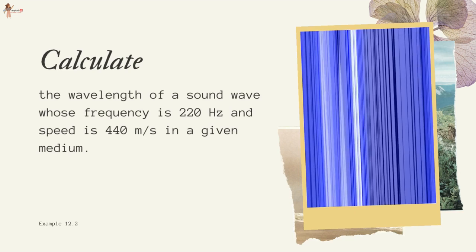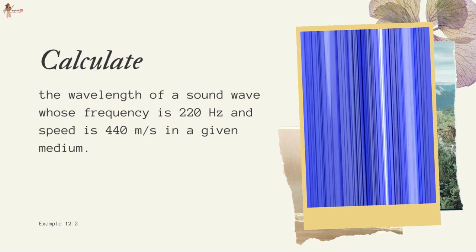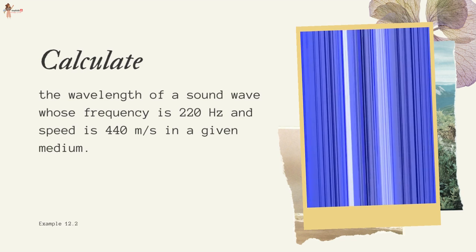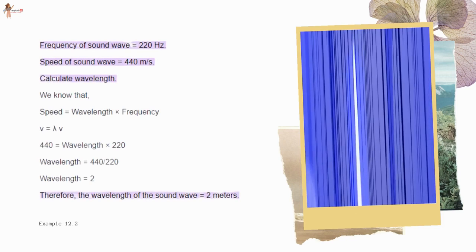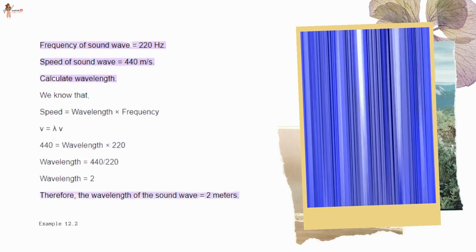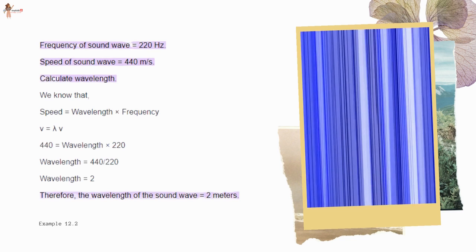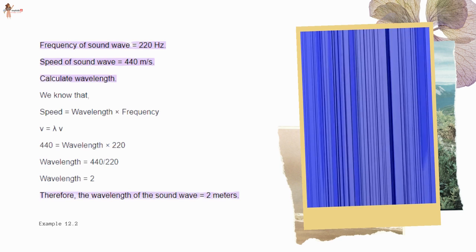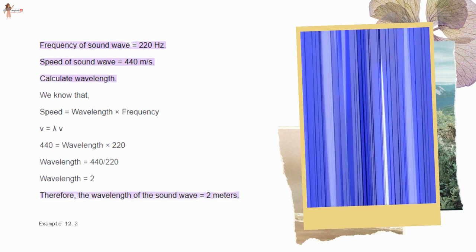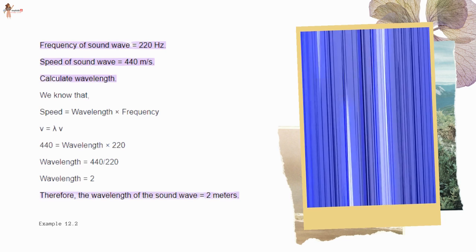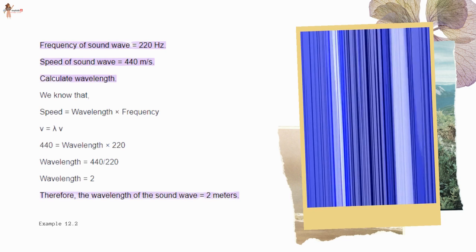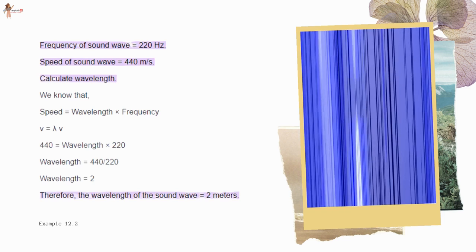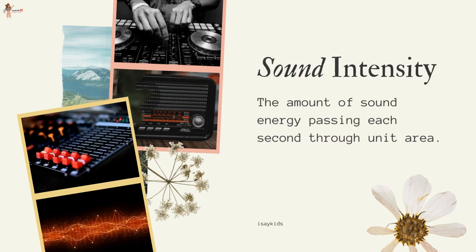Calculate the wavelength of a sound wave whose frequency is 220 Hz and speed is 440 m/s. Speed = wavelength × frequency, so 440 = wavelength × 220, thus wavelength = 2 meters. The amount of sound energy passing each second through unit area is called the intensity of sound.